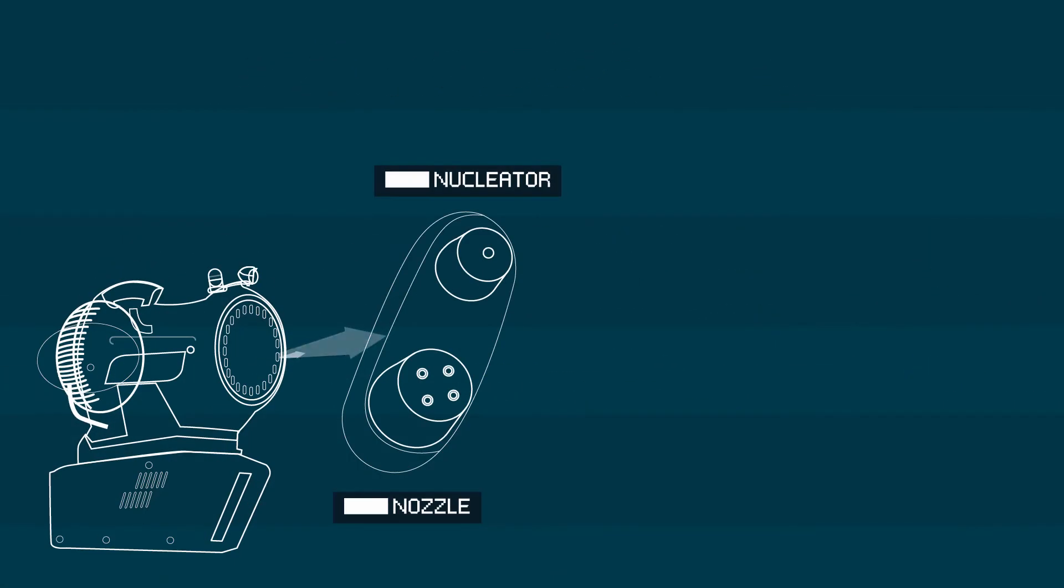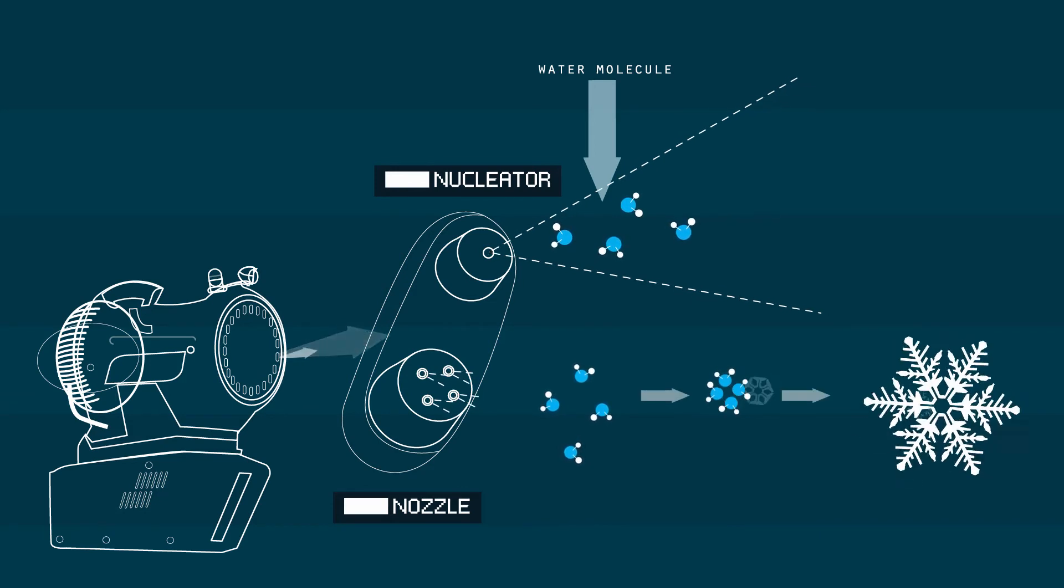As water is fired from the guns, it's atomized by the nozzles, transforming into a fine mist which combines with the nuclides and freezes, creating snow.